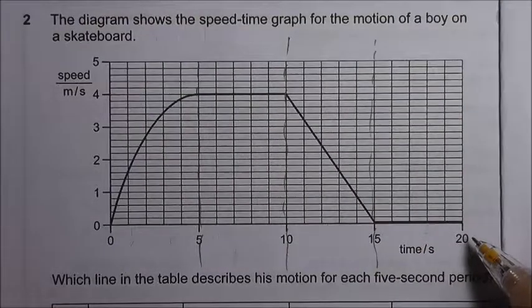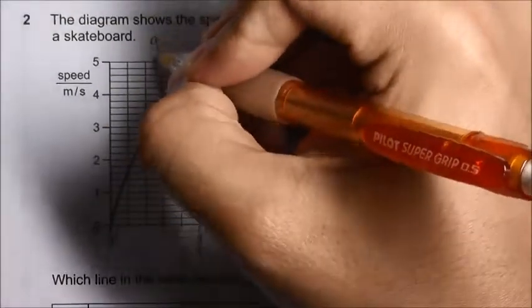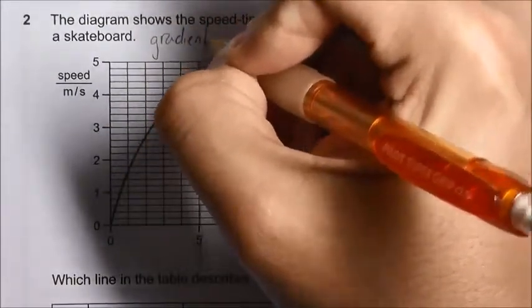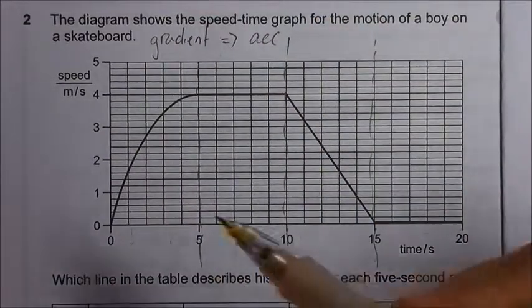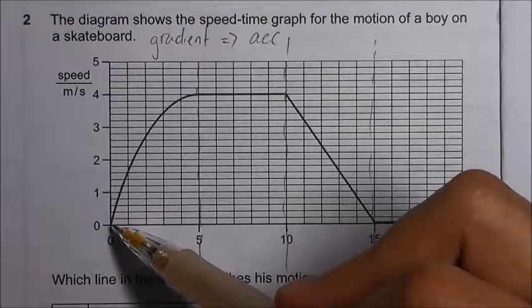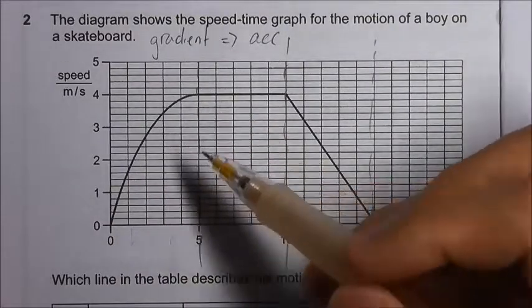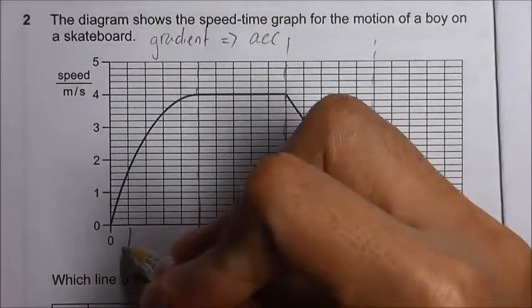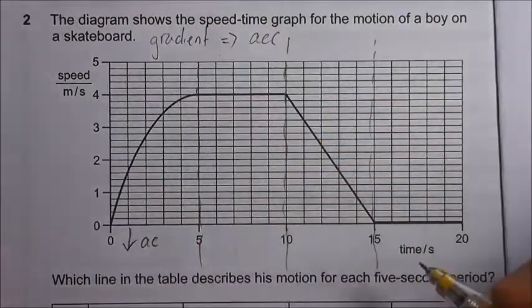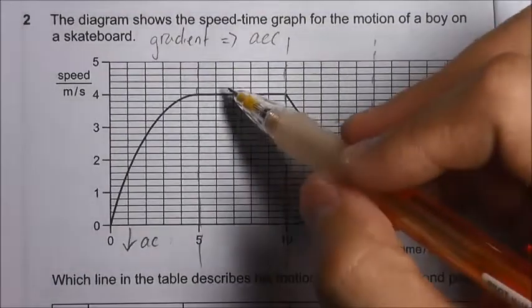As we all know, the gradient of a speed time graph will give us the acceleration. For the first section, 0 to 5 seconds, we see that the gradient is decreasing. If the gradient is decreasing, that means that the acceleration is decreasing.